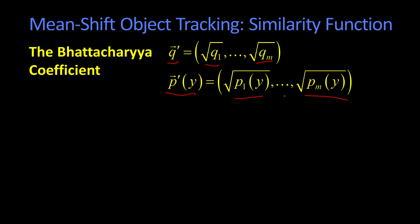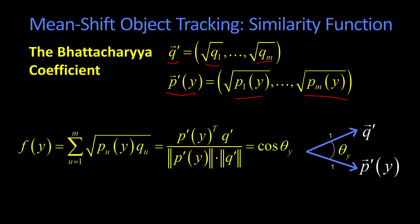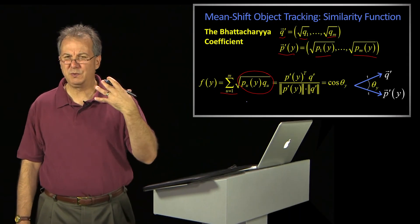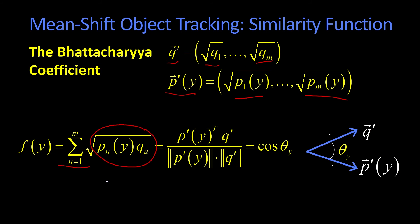When we define it that way, the Bhattacharyya relationship is defined as follows: just take the sum over the product of those square roots. And you might ask, well, why would you do that? Well, you quickly realize that if you take the magnitude of those square rooted vectors, the magnitude is the square root of the sum of the squares.